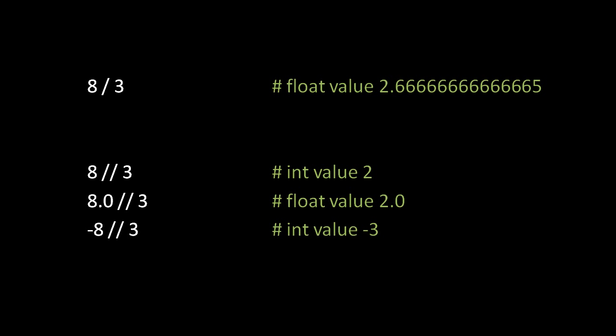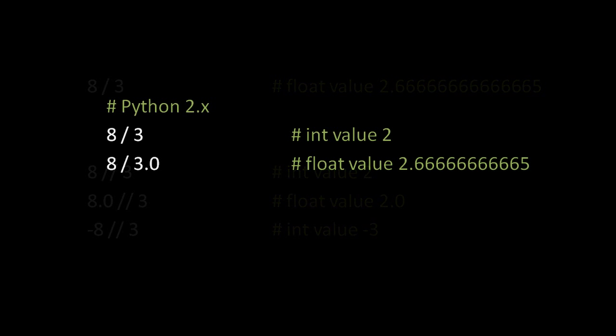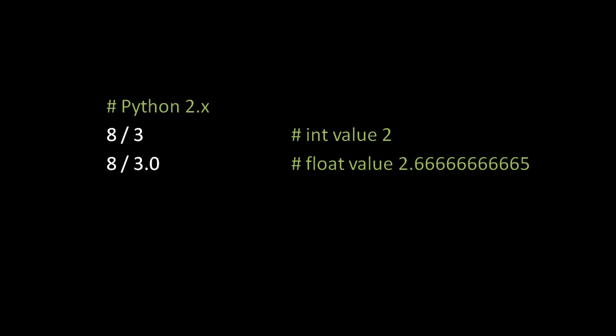While the normal division operator is a single slash, there's also a double slash operator which does what Python calls floor division — it simply rounds the answer down to the next integer. So 8 // 3 returns the int value 2, not 2.666. 8.0 // 3 returns 2.0 as a float because one operand was a float. And -8 // 3 returns -3, not -2 — it rounds down to more negative, not towards zero.